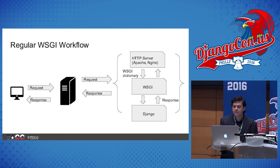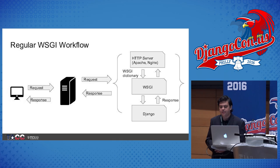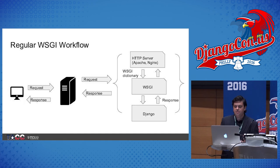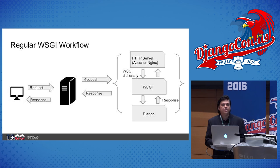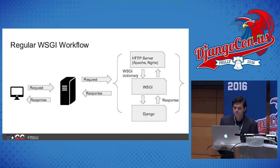The WSGI server sends all the information with headers and a WSGI dictionary to Django. Django processes all the data, creates the response, sends it back to the client, and the connection is closed. All of this happens on a thread. So if we tried to implement WebSockets in this same workflow, that would mean whenever our response goes back, this thread would not finish — we'd have to keep the thread running in an infinite loop just waiting for other messages. Obviously, this is not very scalable, and we'd run out of threads very quickly.